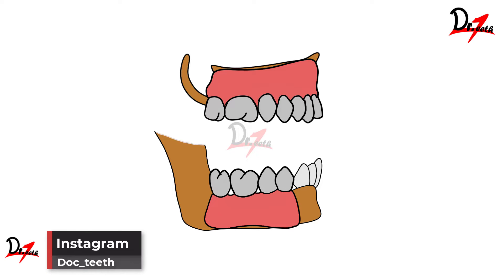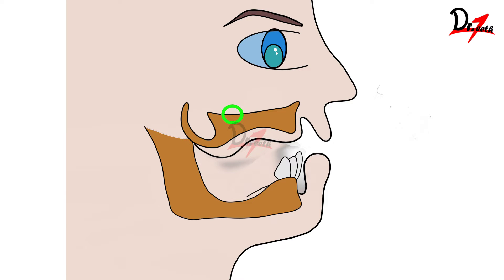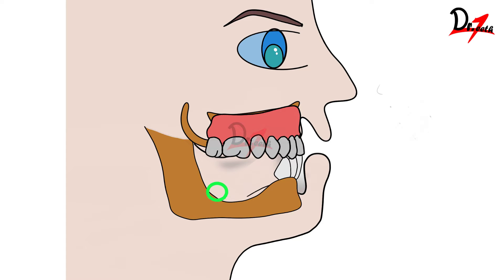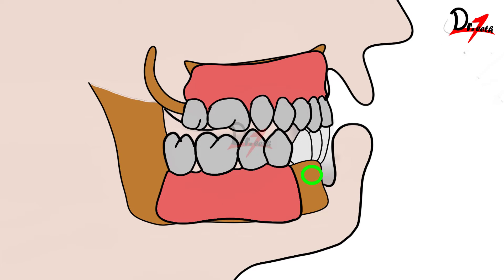Suppose we have a patient with a maxillary edentulous ridge and a mandibular ridge with anterior teeth present. If we give such a patient a complete denture for the maxilla and a distal extension RPD for the lower, and he starts wearing them, how does the combination syndrome develop?